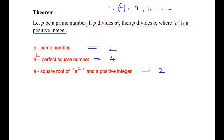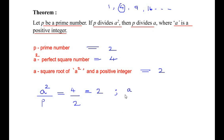Now according to the theorem, it states that if p divides a squared, let us see if p divides a squared — that is a squared over p. In our example, we have taken a squared as 4 and p as 2, so this is perfectly divisible — we get 2. Then p also divides a. We have taken a as 2 and p as 2, so this is also perfectly divisible, which gives 1. So in general, if any prime number divides a square number, then it will definitely divide its square root number also.